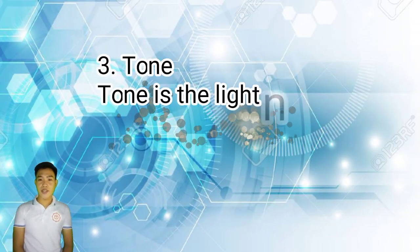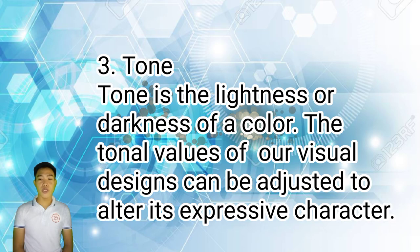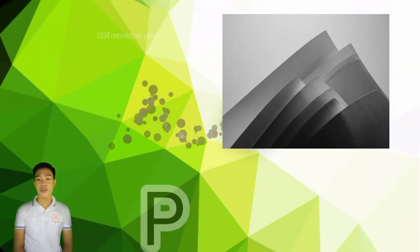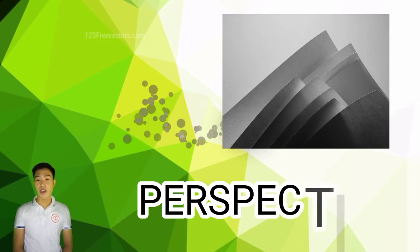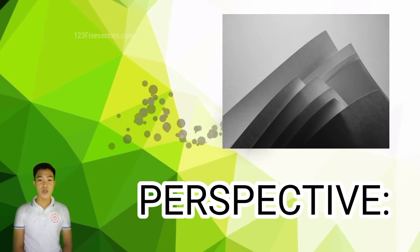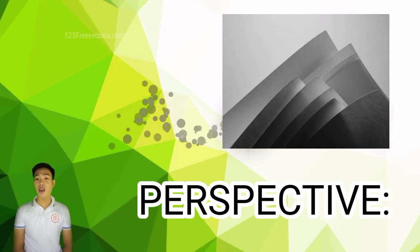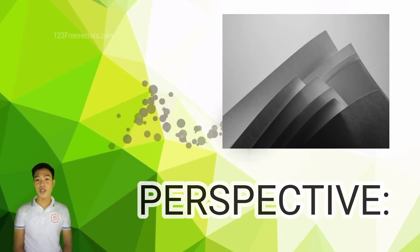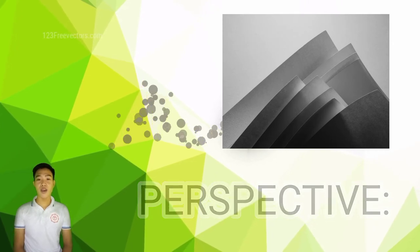Number three is tone. Tone is the lightness or darkness of a color. The tonal values of our visual designs can be adjusted to alter their expressive character. Tone is important because it can be used to represent things, objects, people, or places in descriptive or symbolic ways — using lighter or darker tones that enhance the vibe of our presentations.